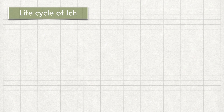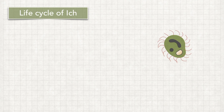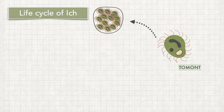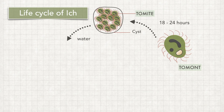How does ICT colonize the fish and spread the disease? Here I will show you the life cycle of the parasite ICT. When the parasite leaves the infected fish, it is generally known as a tomont. This tomont will attach to substrates in the water and form a thin-walled cyst. Inside the cyst, the tomont will divide into many small cells within 18 to 24 hours, which are called tomites, and release them into the water.